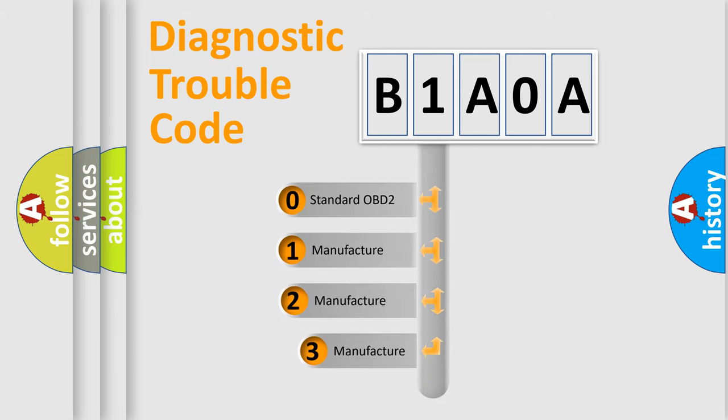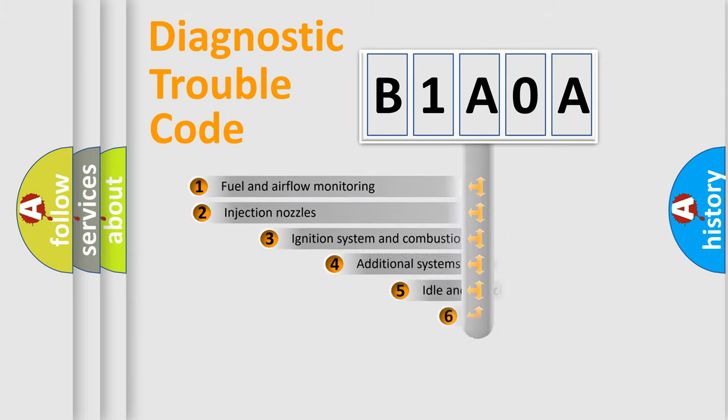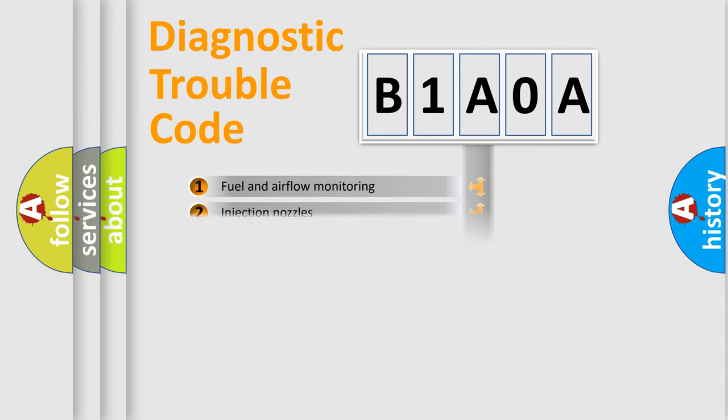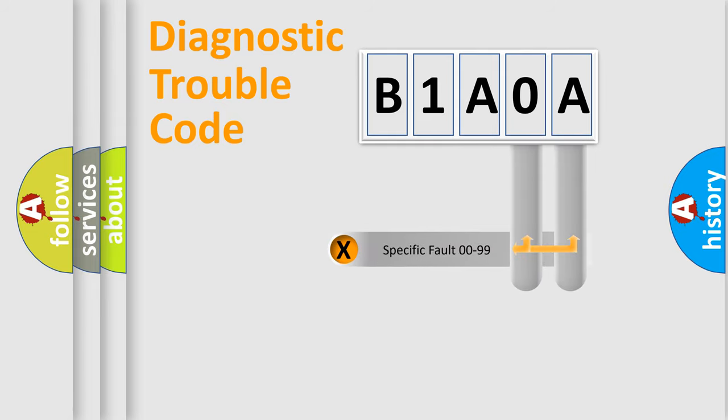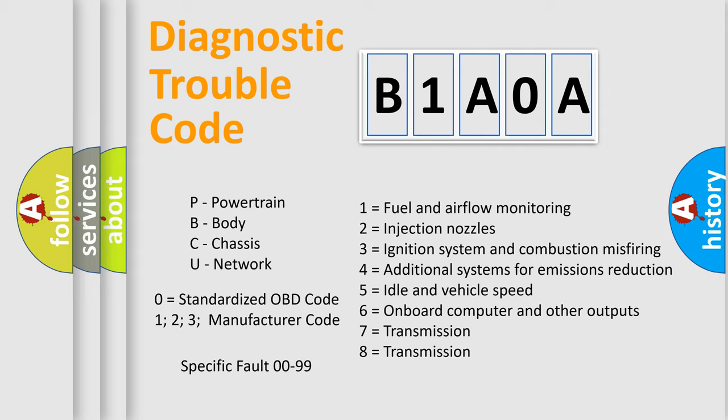If the second character is expressed as zero, it is a standardized error. In the case of numbers 1, 2, or 3, it is a manufacturer-specific error. The third character specifies a subset of errors. The distribution shown is valid only for the standardized DTC code. Only the last two characters define the specific fault of the group. Let's not forget that such a division is valid only if the second character code is expressed by the number zero.